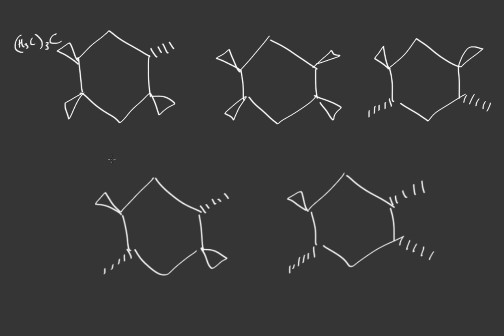We're going to demonstrate an example of how to rank conformer stability when we have different cyclohexanes with methyl groups on them. Let's begin with a trick I use to determine conformer stability.